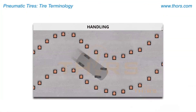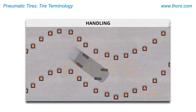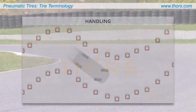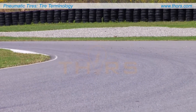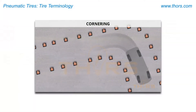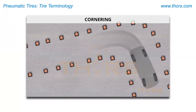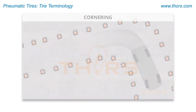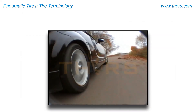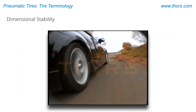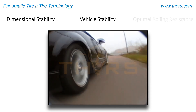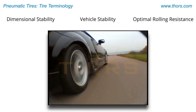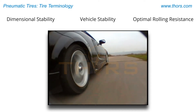Controlled steering and handling response at operating speeds, such as when changing lanes and quartering, are also required. In addition, tires provide dimensional stability, vehicle stability, and optimal rolling resistance to achieve the desired fuel economy.